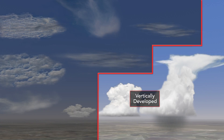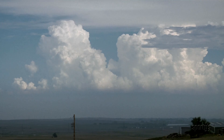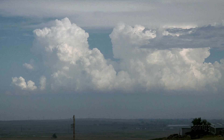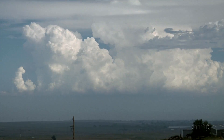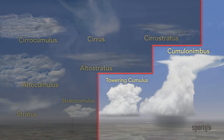Vertically developed clouds, the fourth family, indicate increased instability in the atmosphere. The extensive vertical development shows rising currents are penetrating high into the atmosphere. Towering cumulus and cumulonimbus — the thunderstorm cloud — signal turbulence. Wind shear, lightning, and hail are all possible aviation hazards.